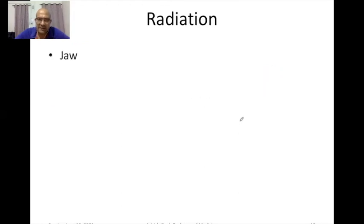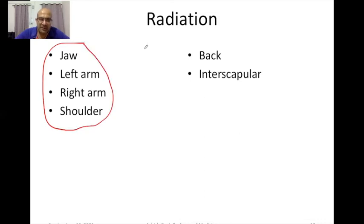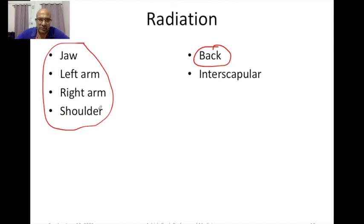Where does the pain radiate? Does it stay where it started or does it go somewhere — to the jaw, left arm, right arm, shoulder, or back in the interscapular region? These are characteristic of anginal pain. A pain going to the back between the two shoulder blades is classical of aortic dissection. Pain radiating to the back can also be seen in pancreatitis. Shoulder radiation can be seen in any pathology with an inflamed diaphragm, where pain travels via the phrenic nerve to the shoulder.